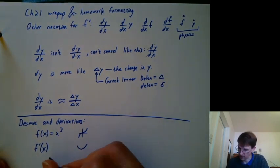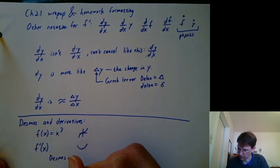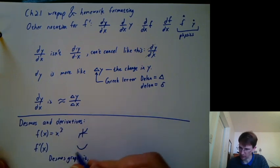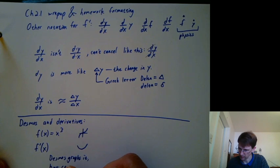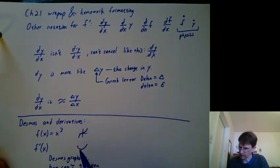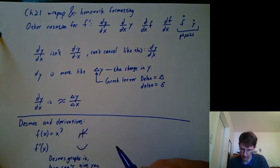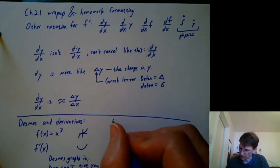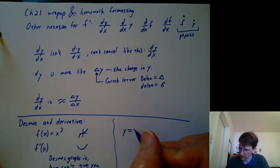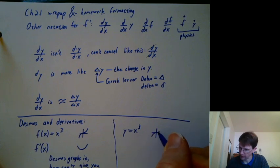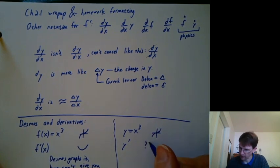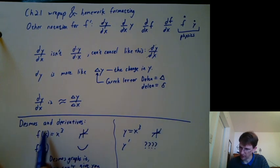The bad news is desmos graphs it, but it can't tell you the formula that matches that parabola. If you want software that can give you the formula for a derivative, Wolfram Alpha can do that, and lots of other things can too. Compare this to if you tell desmos y equals x cubed, it'll graph it. But then if you say y prime, desmos is all confused. You need to give a function a name before you can take the derivative of it in desmos.